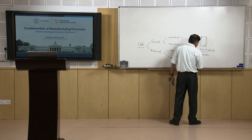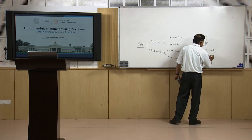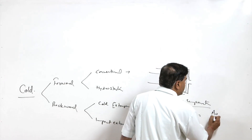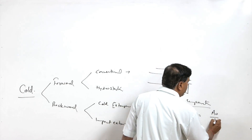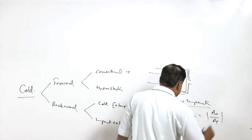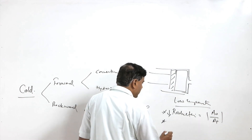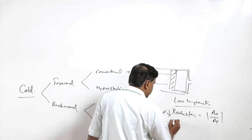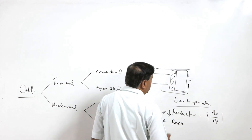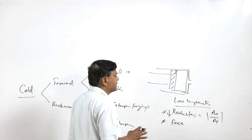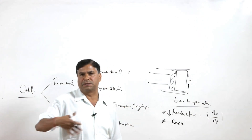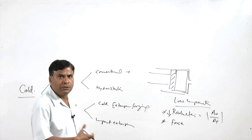The reduction is somewhat less — the initial area divided by final area ratio is less. Another thing is that the forces are too high because at high temperature material loses its yield strength and becomes ductile.